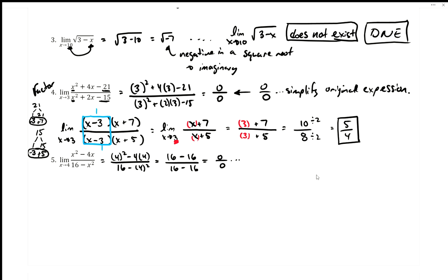Since it's a rational function — a polynomial over a polynomial — we should factor first. In the numerator, we only have two terms and there's an x in common, so we factor out x, leaving x(x - 4).